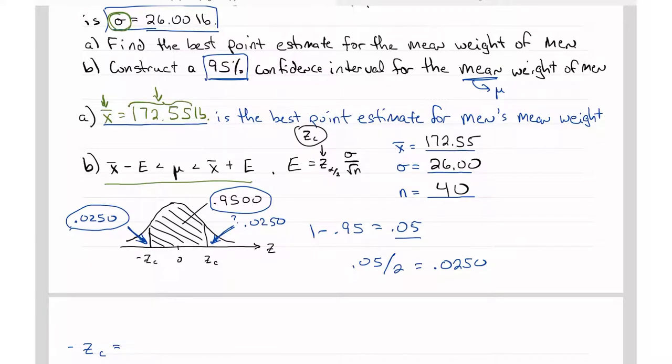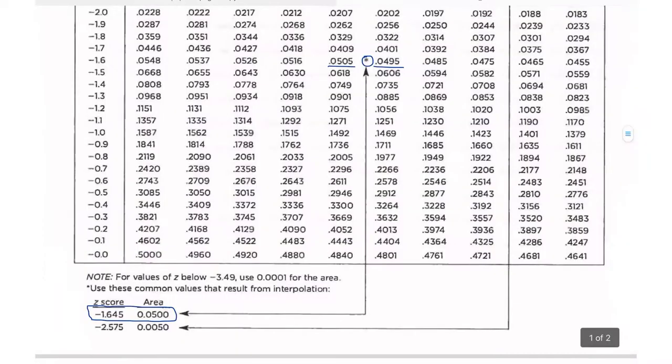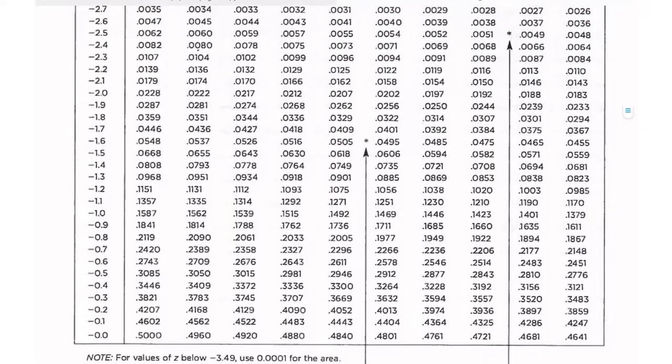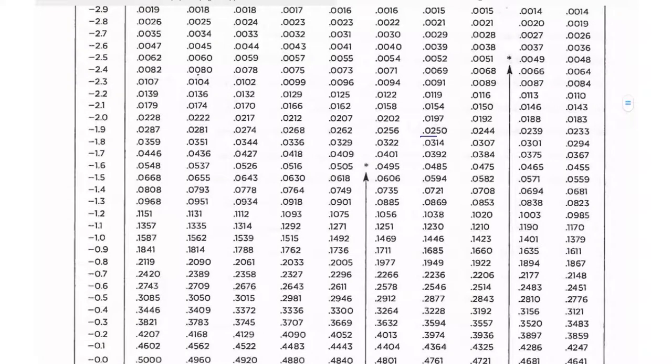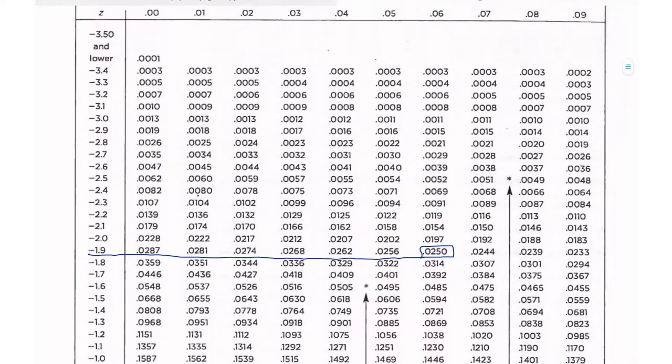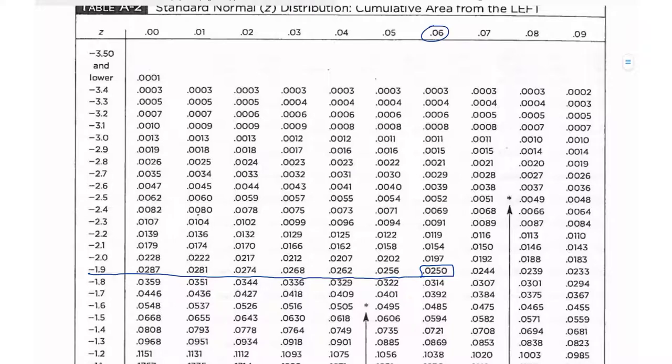So I'm going to go to my Z table and look for 0.0250. I'm going to get rid of my scribble here, and I need 0.0250, and I found it right here. So it's good to use a ruler or straight edge or something, something that won't leave a mark on your table if you're using a piece of paper. So on this side it's negative 1.9, and above it is 6. So this is going to be a Z of negative 1.96.